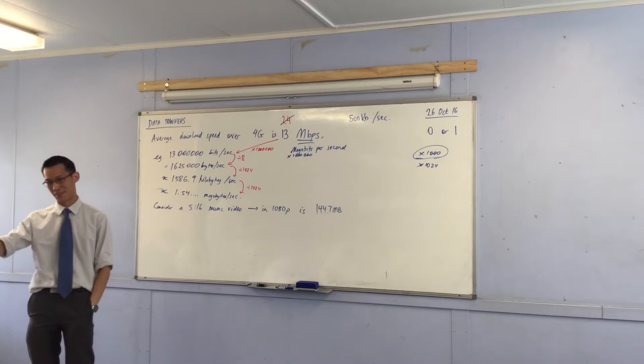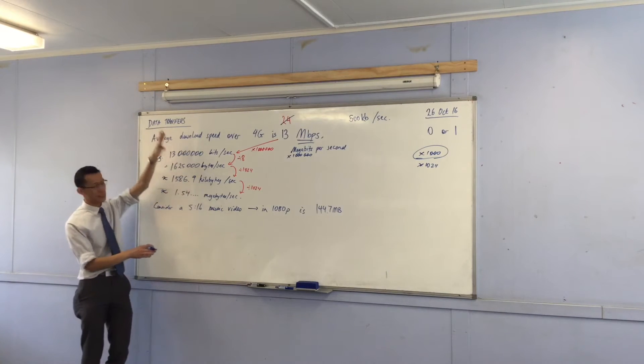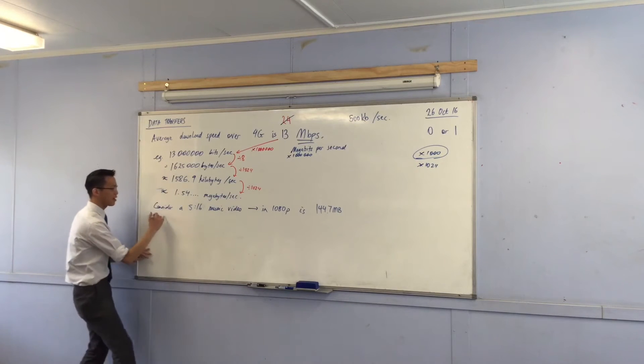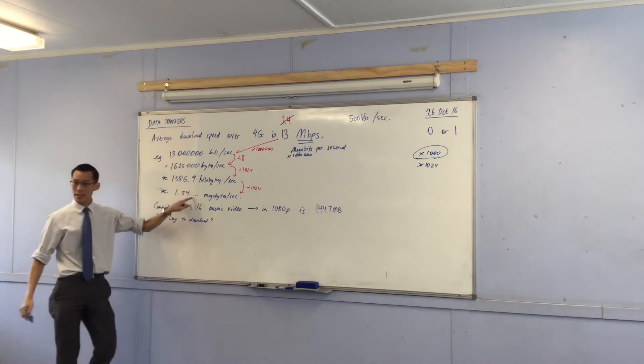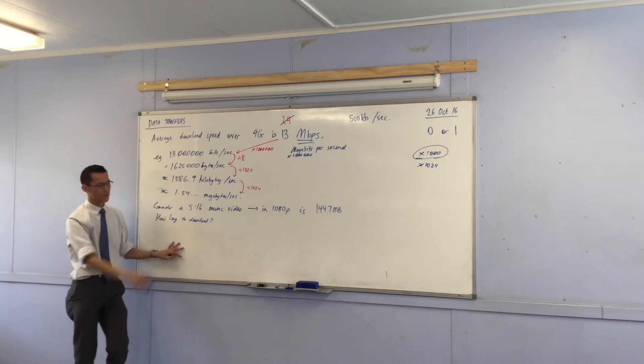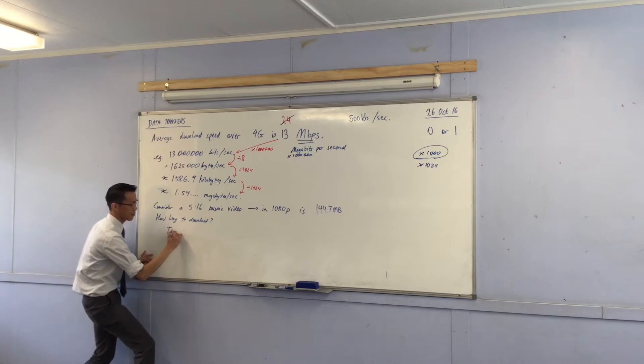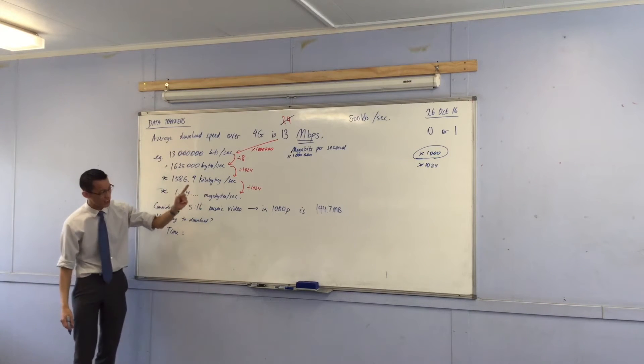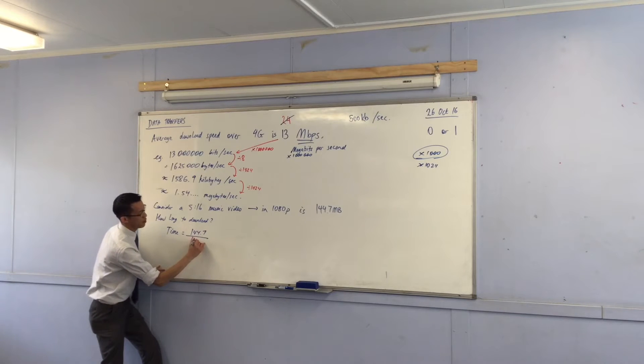Here's my question to you: how long is it going to take to download? You hit it on YouTube, your app starts loading. How long to download? You've already done the work to convert this into megabytes per second and this is in megabytes. So the download time in seconds is going to be megabytes divided by megabytes per second. That's your amount and your rate. So I'm going to write that down: 144.7 divided by 1.54.